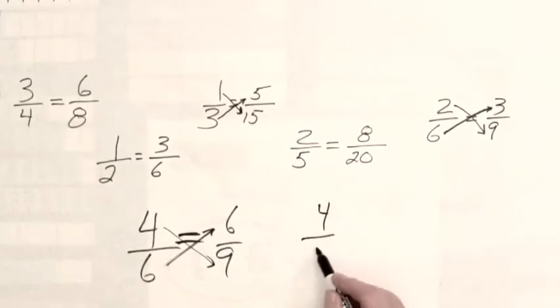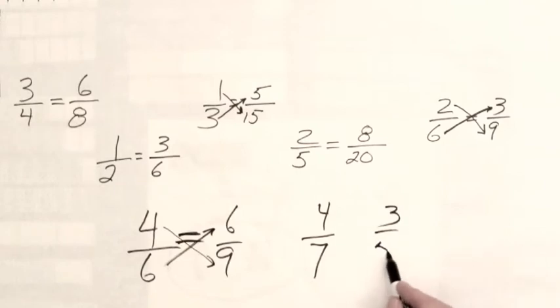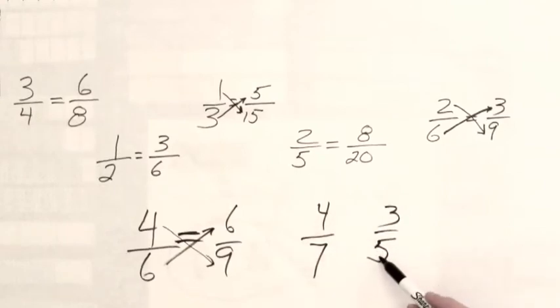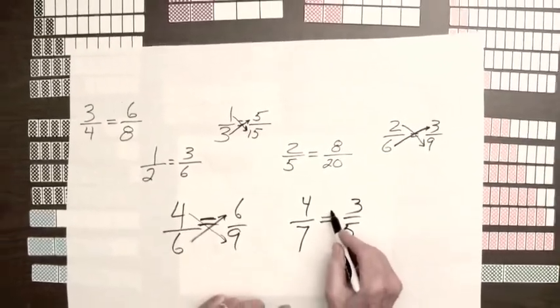For the fractions four-sevenths and three-fifths, four times five is twenty, and seven times three is twenty-one, so these fractions are not equal.